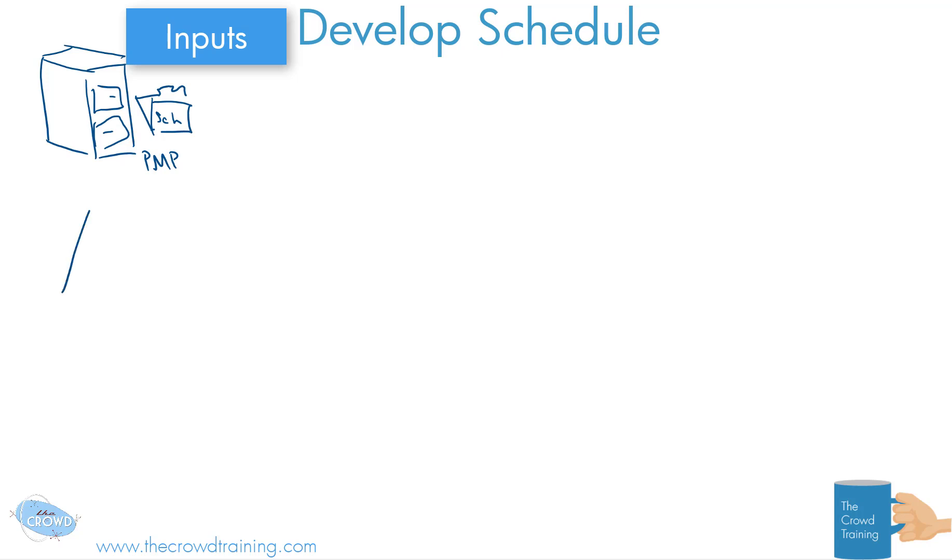Also, you had various project documents. A lot of the documents that we're using for the schedule could include things like the activity list. We need to know what activities are to be done and what is the basis for those activities. There could be other documents like assumption logs and duration estimates.